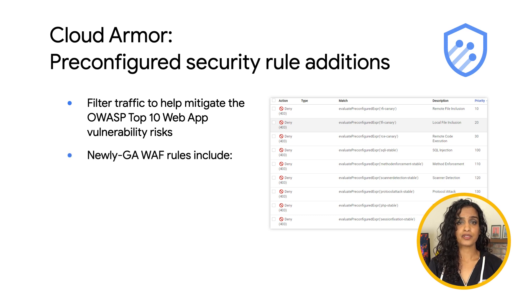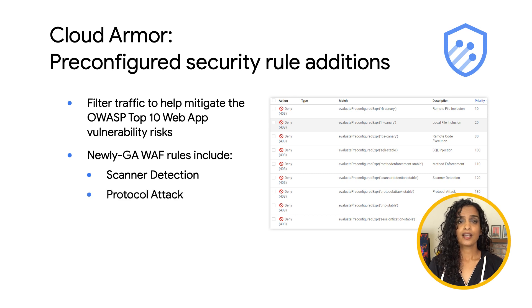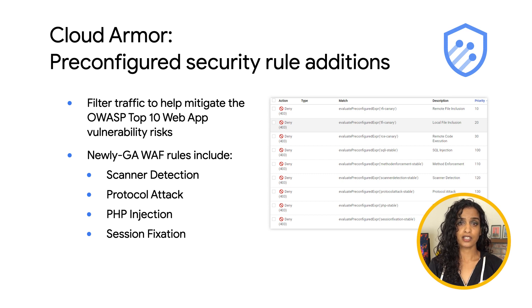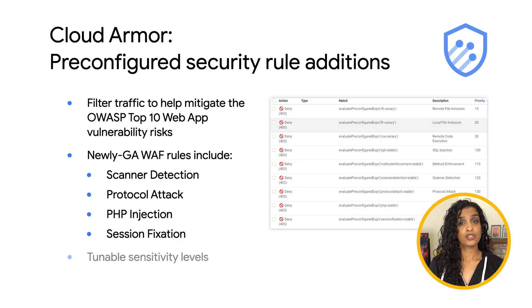The new pre-configured WAF rules include scanner detection, protocol attack, PHP injection, and session fixation. The available pre-configured rules are based on the OWASP mod security core rule set. The rules allow Cloud Armor to evaluate dozens of distinct traffic signatures by referring to conveniently named rules, instead of requiring you to define each signature manually. They can be tuned to different sensitivity levels as well.